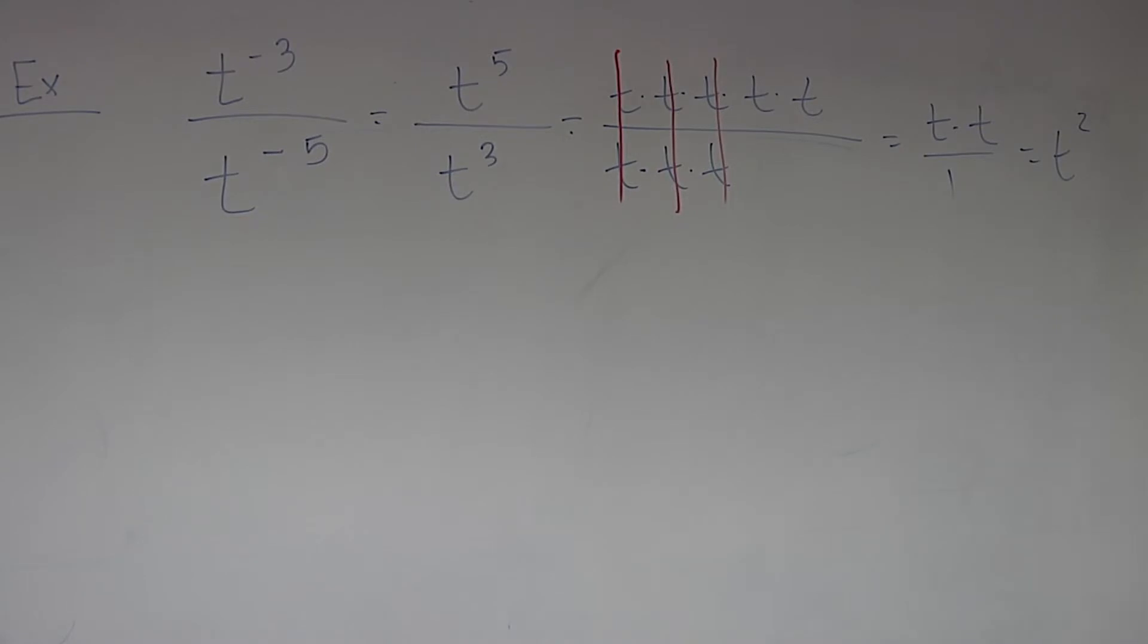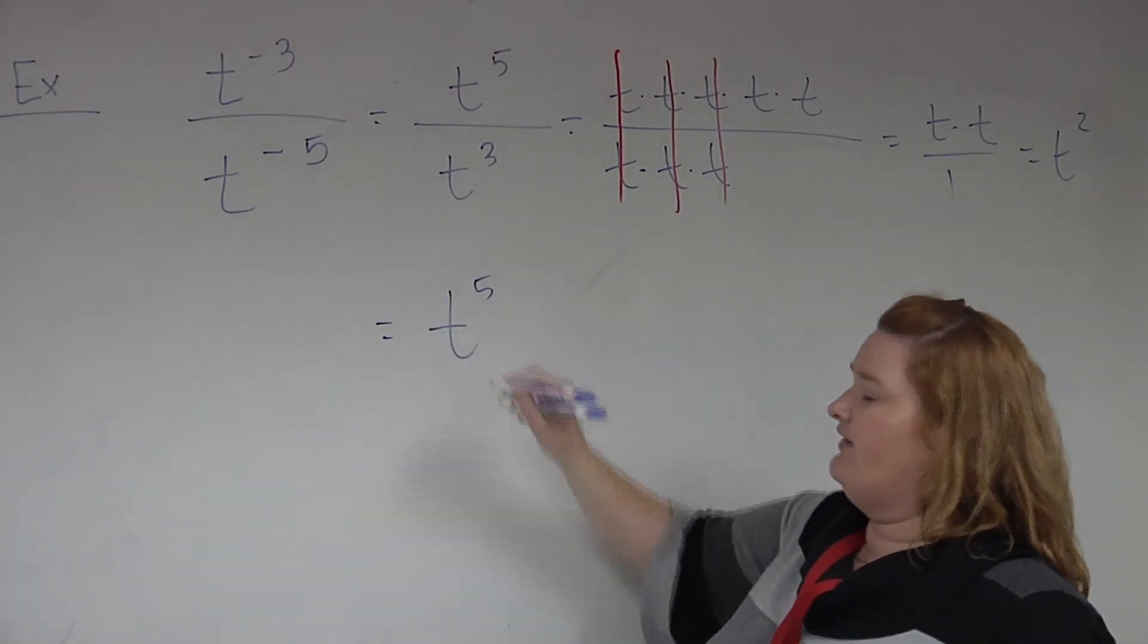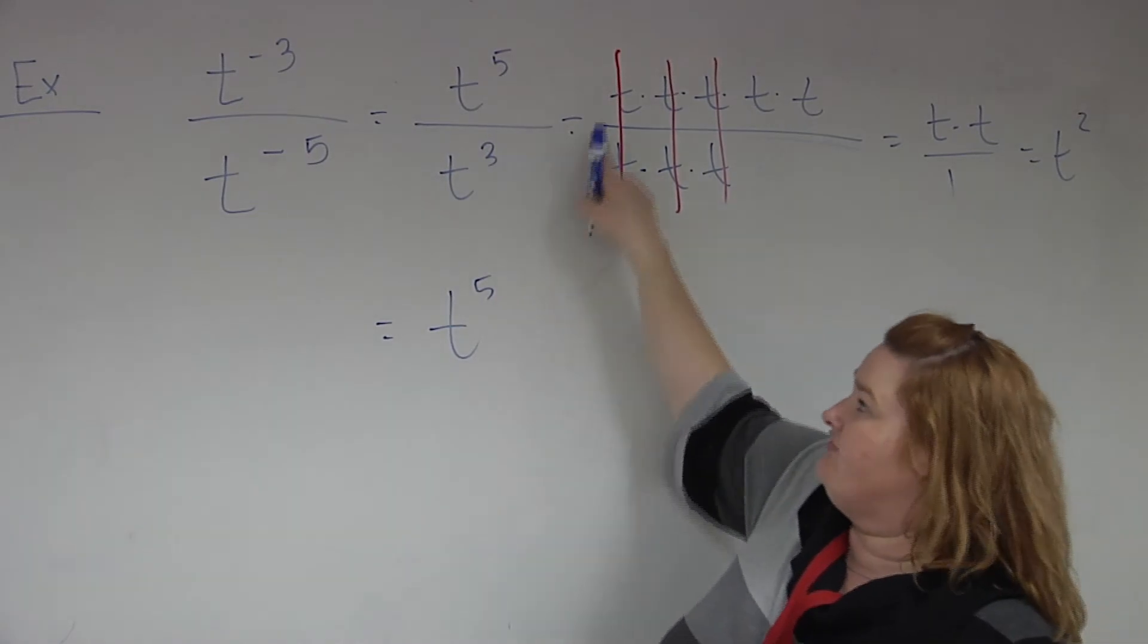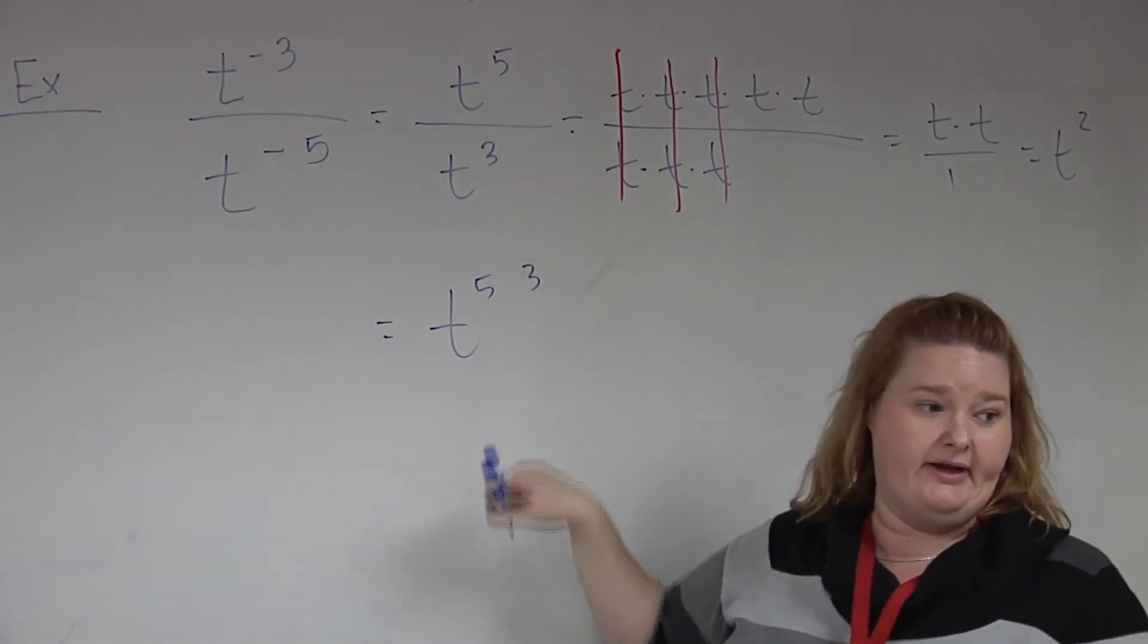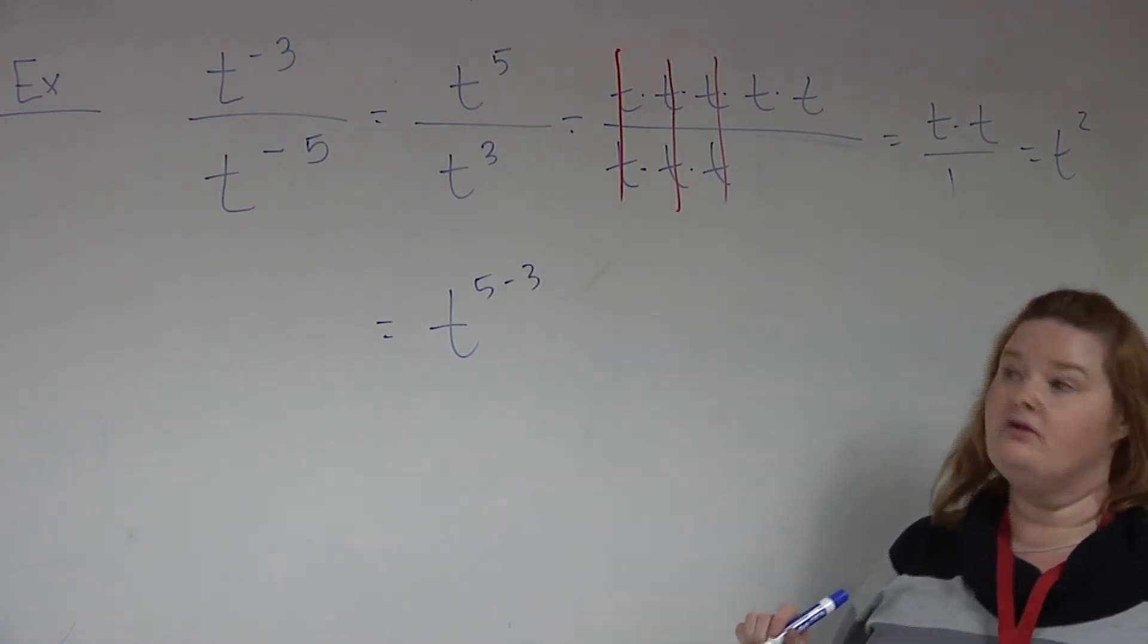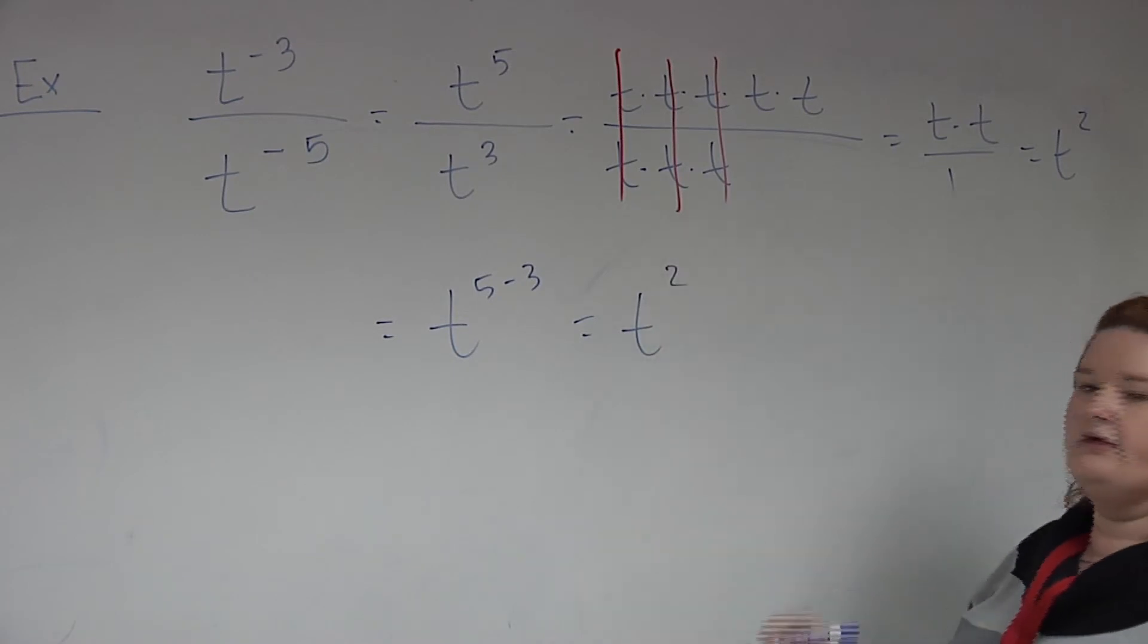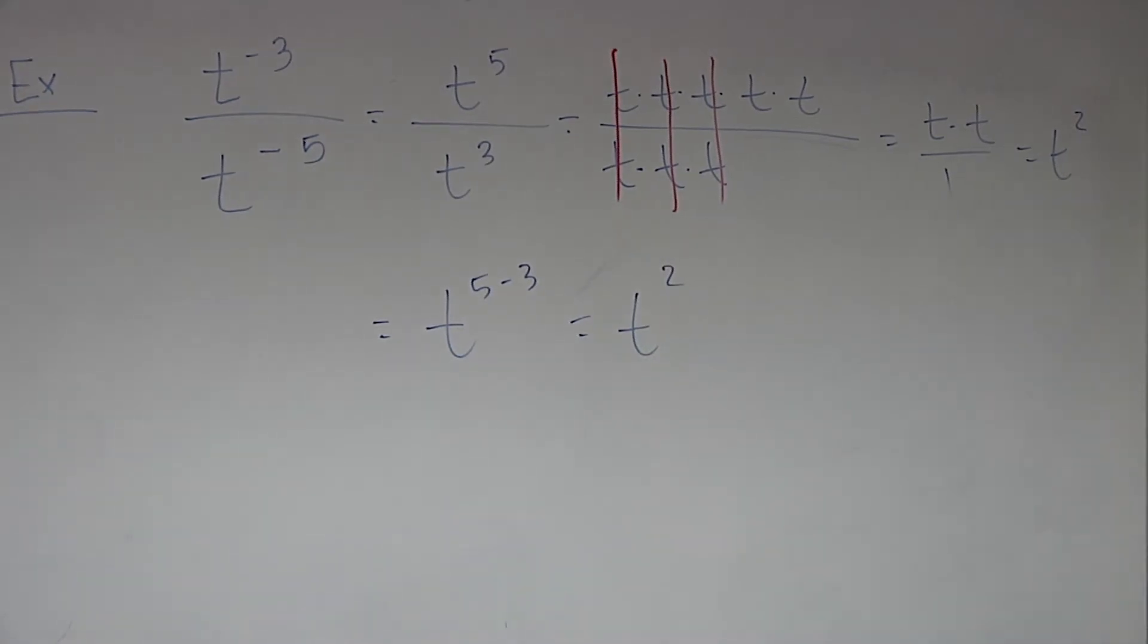Now is there a shorter way to do that? You can also subtract. So you can then take the problem and say, okay, we have a t to the 5. And then I'm going to bring this 3 up and subtract. Remember, when you bring it up, your sign switches, right? It becomes that negative that you kind of really already had. So you have a t squared. So a couple different ways, or two different ways to do it.